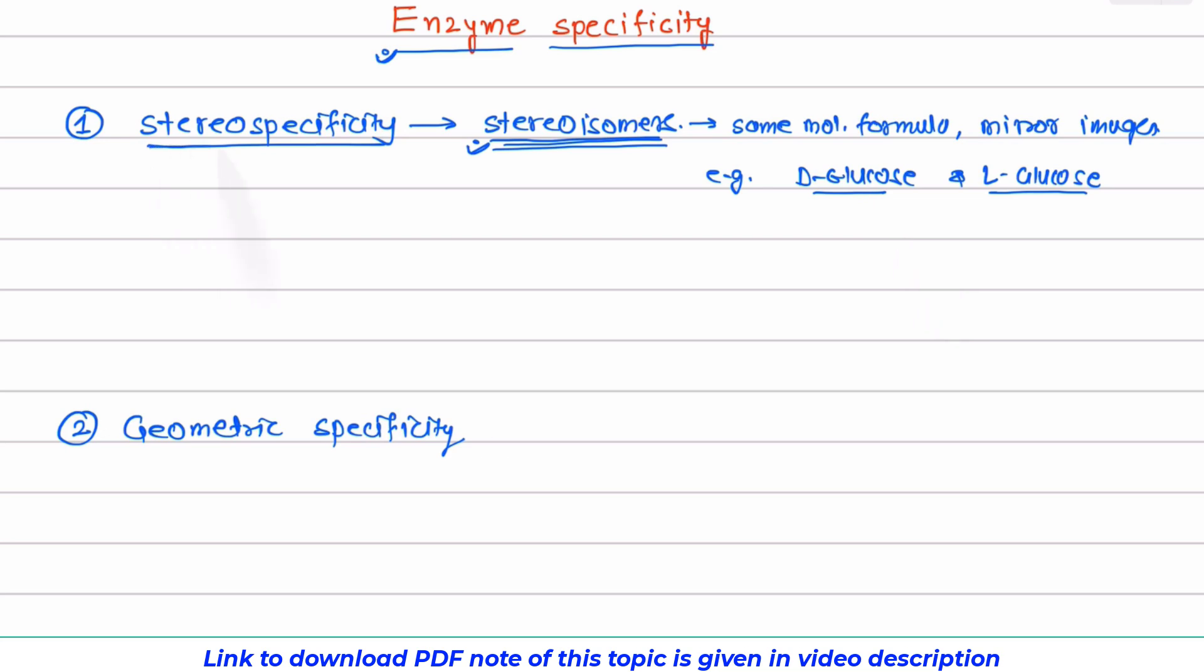Now the example of stereospecificity. For example, we have enzyme glucokinase. This enzyme glucokinase acts only on D-glucose. It does not act on L-glucose. So we can say glucokinase is stereospecific.